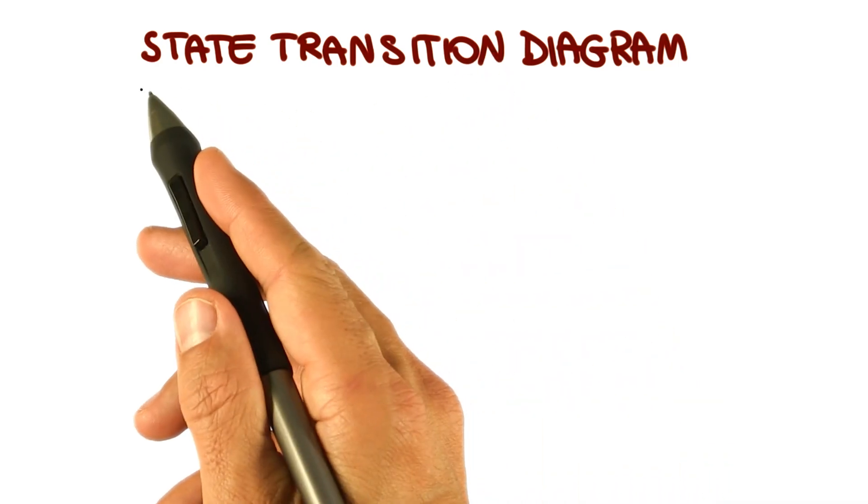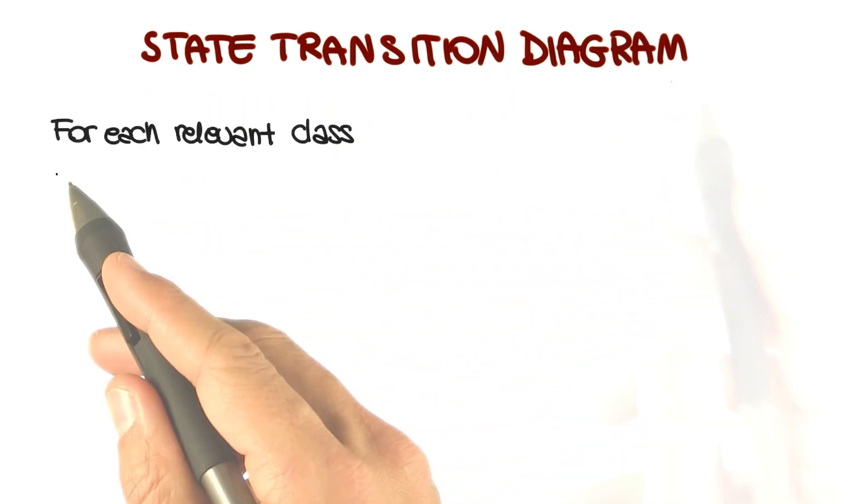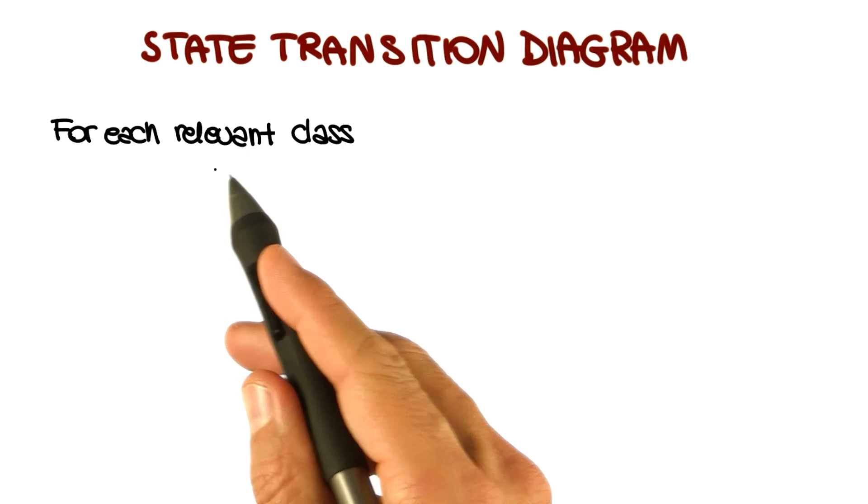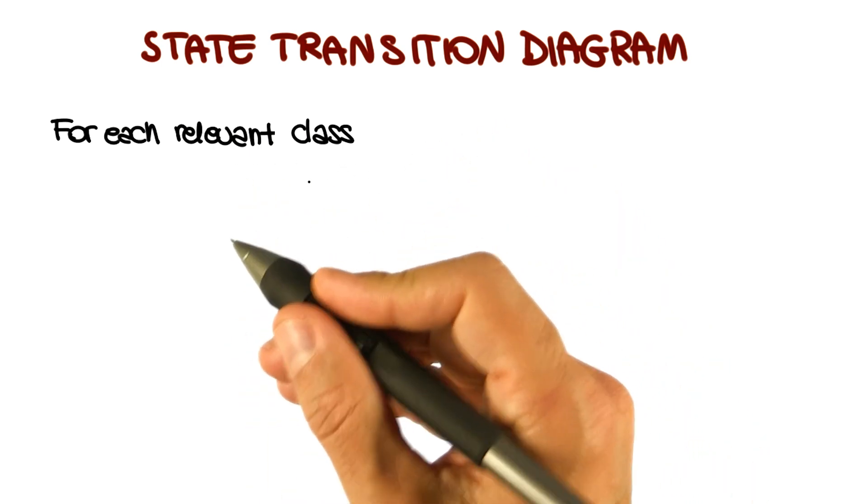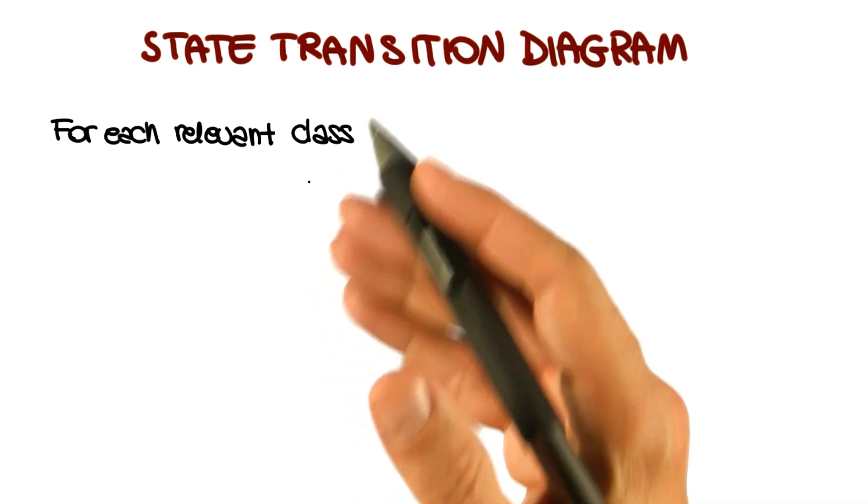The very last diagram that I want to discuss is the state transition diagram. The state transition diagram is defined for each relevant class in the system and basically shows the possible life history of a given class or object.